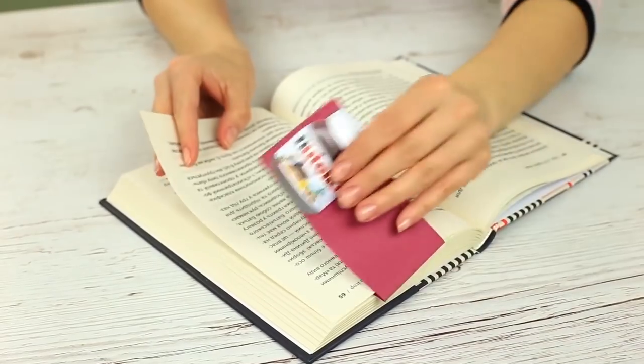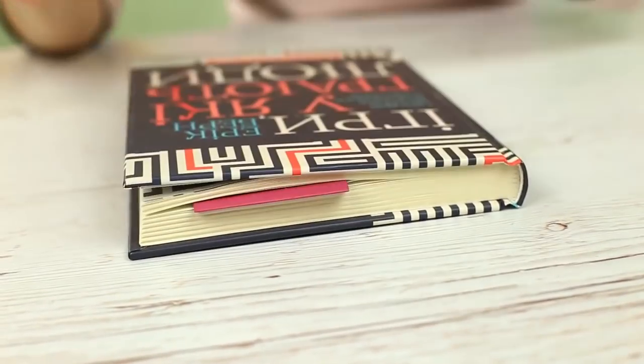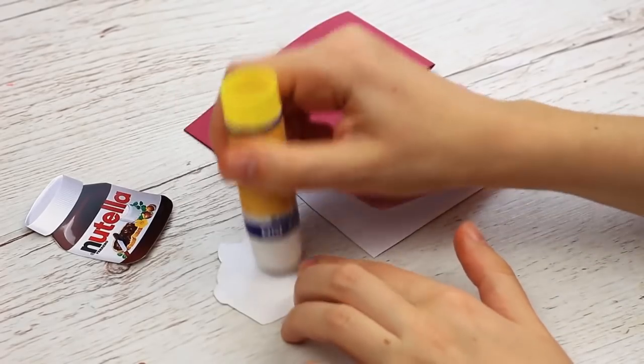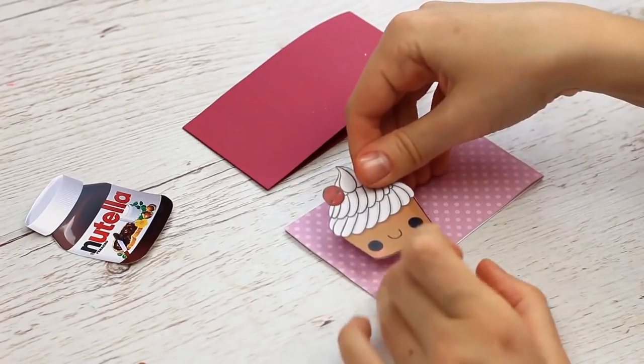We can share another tip on how to make convenient ice cream bookmarks. Attach the dessert images to the paper strips. Fold it in half.